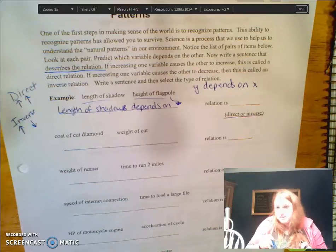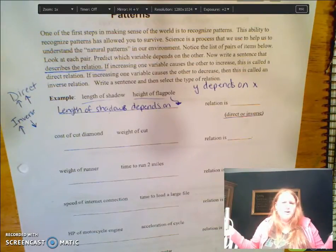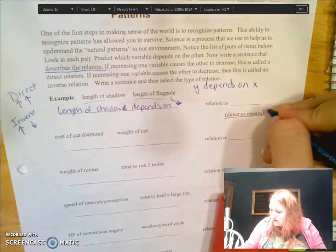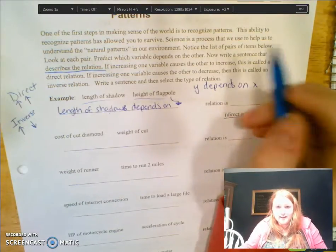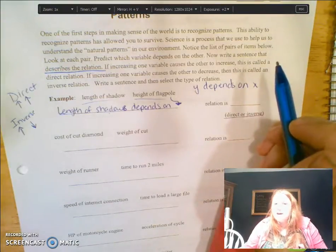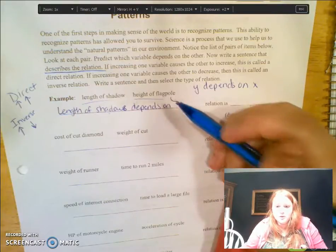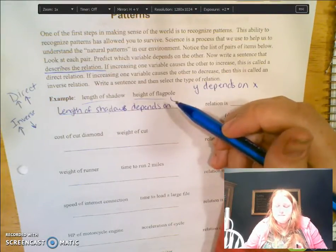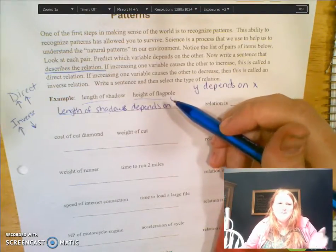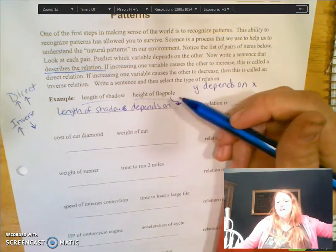When you're looking at variables and their relationship, you need to make sure that everything else is controlled. I couldn't, for example, go to a 20-foot flagpole one day when it's really cloudy and measure the shadow, and then go to a 10-foot flagpole on a sunny clear day and measure its shadow and then compare those, because everything else wasn't controlled.